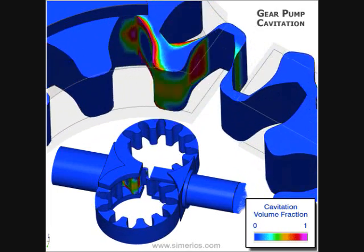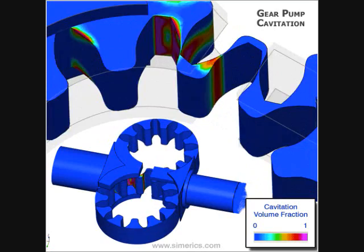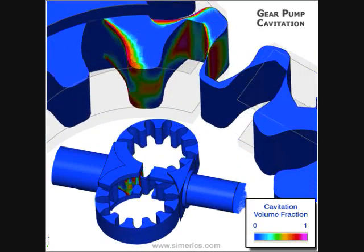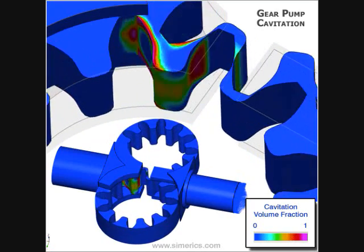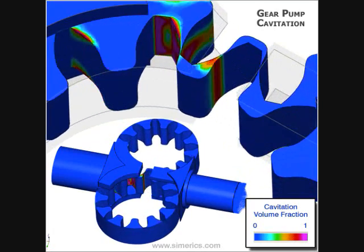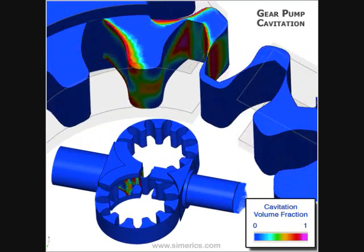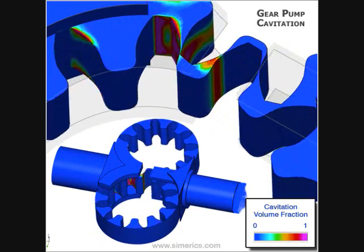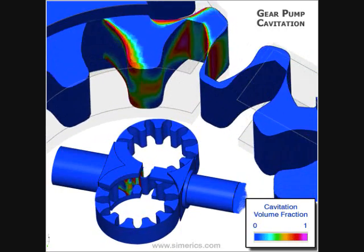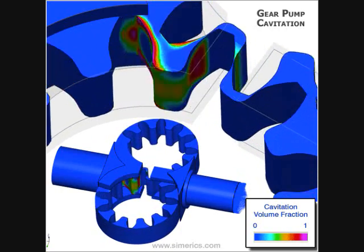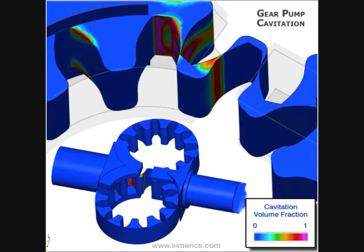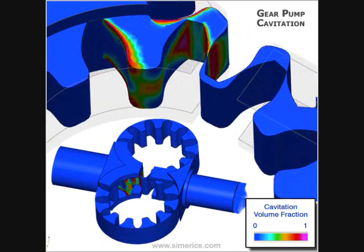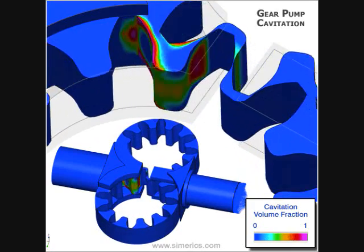In the simulation presented here, the aeration and cavitation in the gear pump is indicated by the magenta areas in the surface plots. These pockets of aeration and cavitation can have a significant impact on performance, damage, and noise.